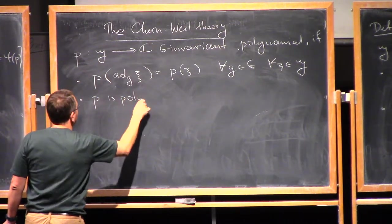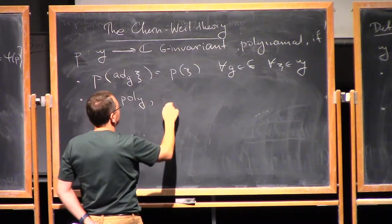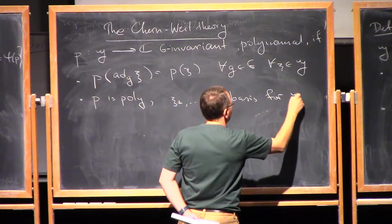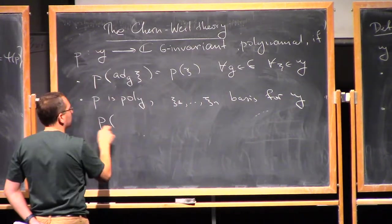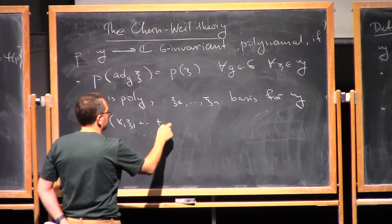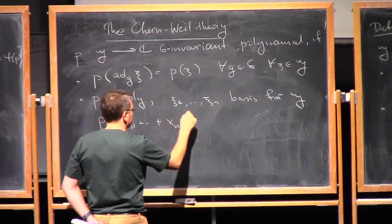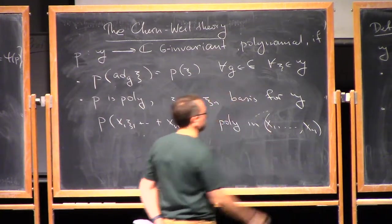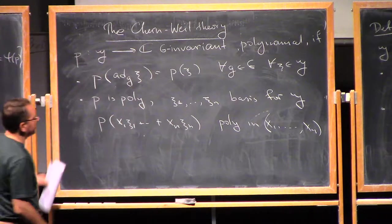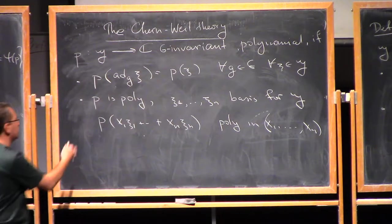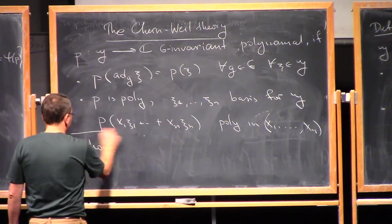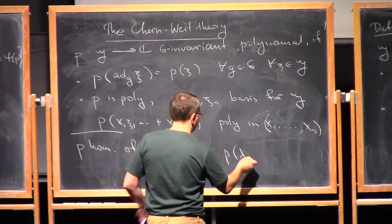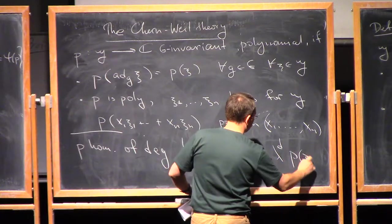And P is a polynomial, meaning that if you choose a basis xi_1 up to xi_n, so the basis for G, then P of x_1 xi_1 plus x_n xi_n is a polynomial in x_1...x_n. And sometimes it will be convenient to work with homogeneous polynomials, which just means P is homogeneous of degree T if P of lambda xi equals lambda to the power T P of xi.